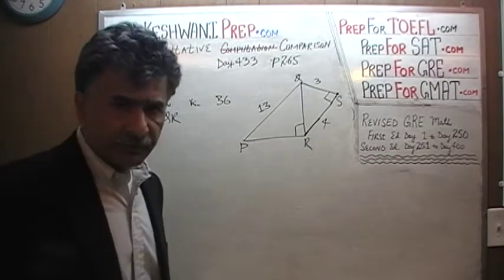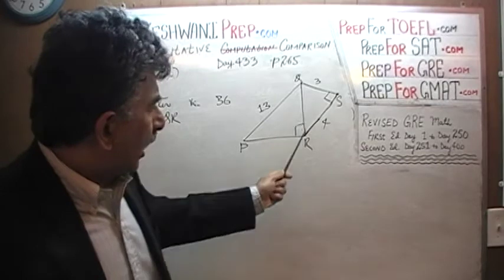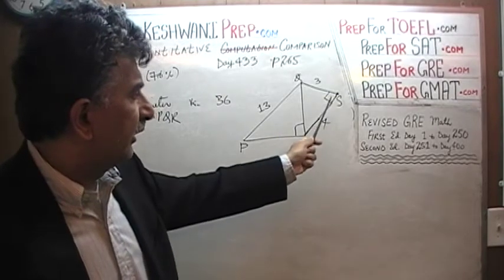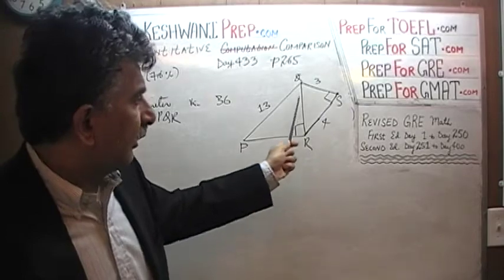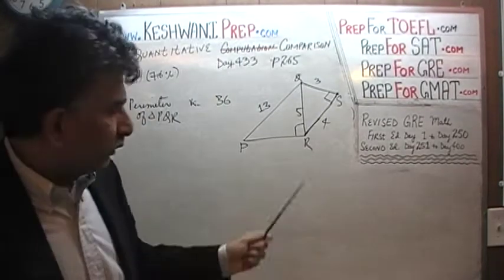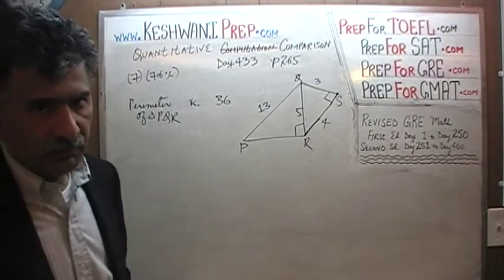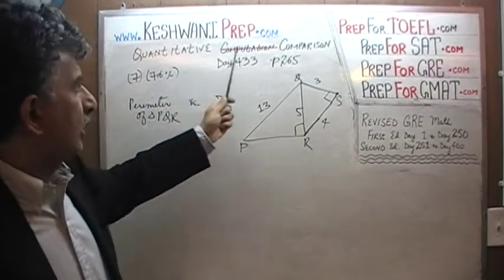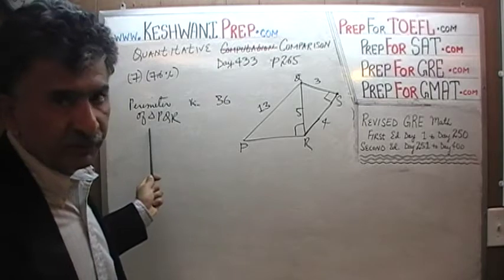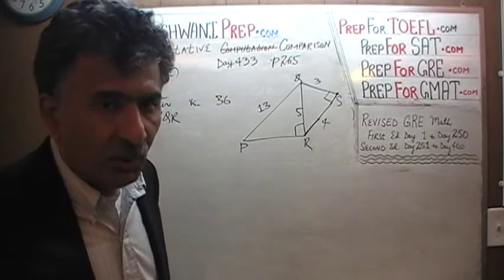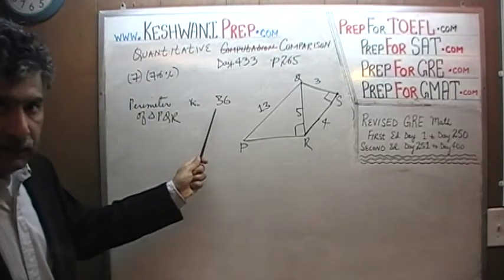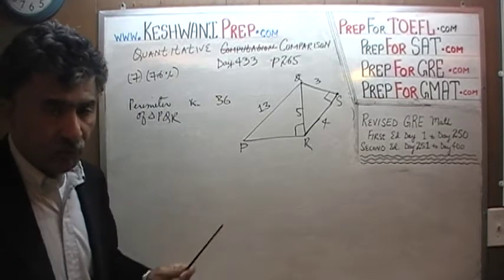The small triangle QRS is straightforward — it is a 3-4-5 triangle. We have 3 here and 4 here; the side facing the right angle is the hypotenuse, which is 5. Now for side PR — we could figure it out, but in quantitative comparison we don't have to. Nobody is asking us what the perimeter is exactly. The question is: is the perimeter of triangle PQR less than, equal to, or more than 36?